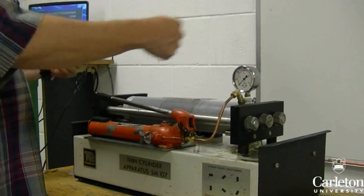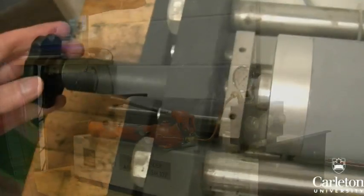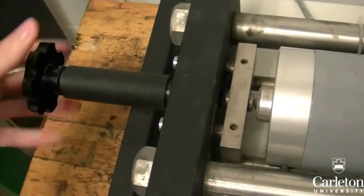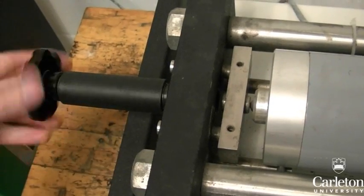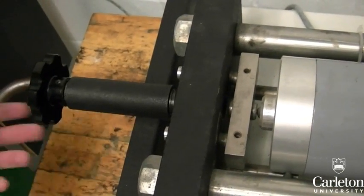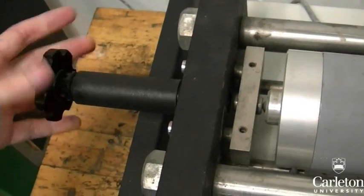This is an aluminum cylinder that we will be using for testing. The condition can be changed from closed-end to open-end by turning this knob, and thus bracing the end of the cylinder against the frame.